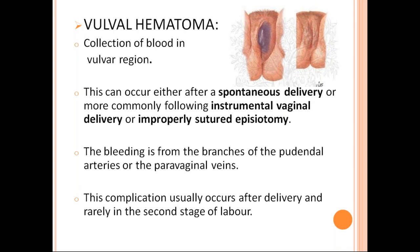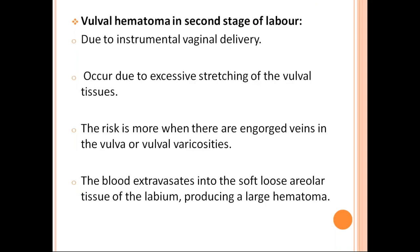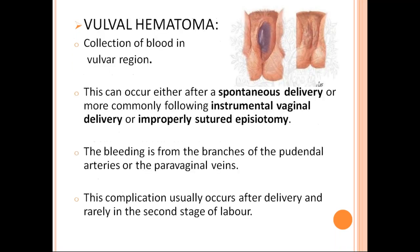While suturing episiotomy, we should secure all bleeders. Otherwise, it will later present as vulval hematoma. The bleeding is from branches of pudendal arteries or paravaginal veins. This complication usually occurs after delivery and rarely in the second stage of labour. Vulval hematoma in the second stage of labour is due to instrumental delivery — the most common cause — occurring due to excessive stretching of vulval tissues. This risk is higher when there is vulval varicosity. The blood extravasates into the soft, loose tissues of the labium, producing a large hematoma.